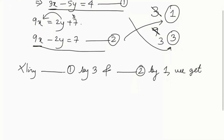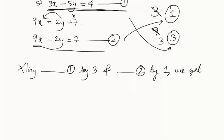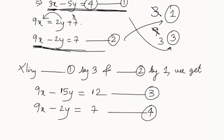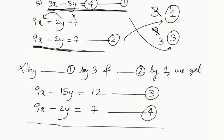Multiplying equation 1 by 3: 3x times 3 is 9x, minus 5y times 3 is minus 15y, and 4 times 3 is 12. That gives us equation 3: 9x minus 15y equals 12. Equation 2 multiplied by 1 stays the same: 9x minus 2y equals 7 — that is equation 4.